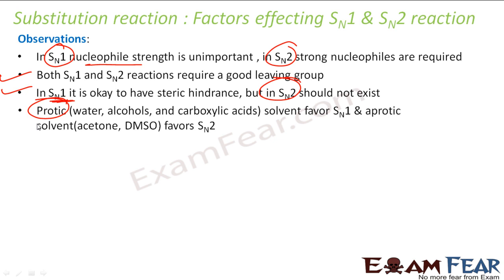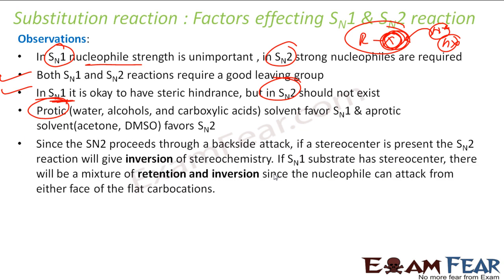Since SN2 proceeds from the back side, if a stereocenter is present, we get inversion of configuration. For SN1 reaction, we get a mixture of retention and inversion because the carbocation intermediate is planar and the nucleophile can attack from either face. We will discuss these stereochemical outcomes further in the next few slides.